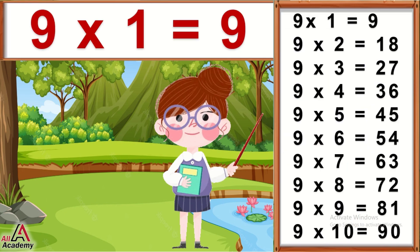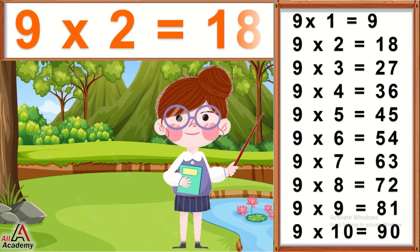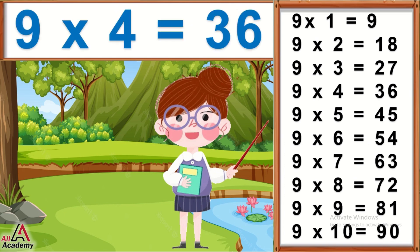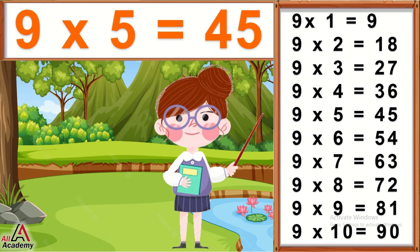9 ones are 9. 9 twos are 18. 9 threes are 27. 9 fours are 36. 9 fives are 45.